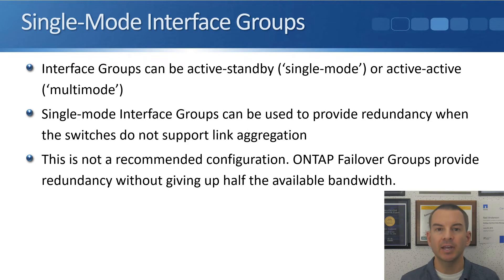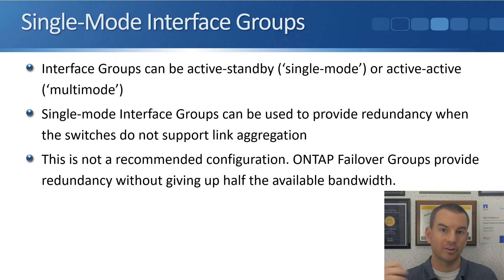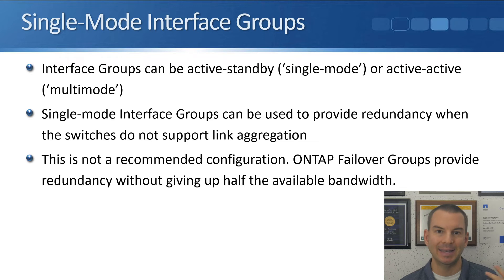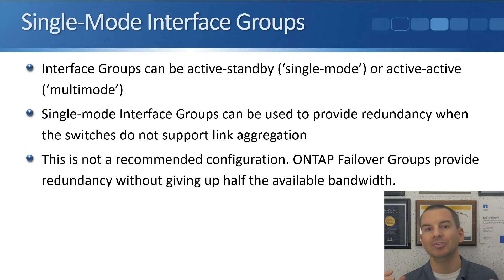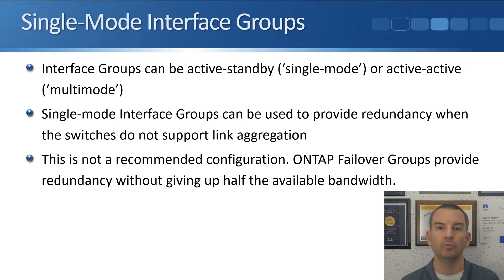If you have a normal Dell server connected to switches that do not support a port channel, you can still get redundancy using active-standby. However, when you configure active-active, it needs a matching configuration on both the server side — NetApp in this case — and the switch side. Active standby single mode interface groups are supported in ONTAP, but you never want to use them, because ONTAP has another redundancy feature called failover groups.